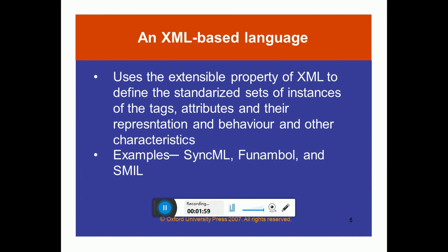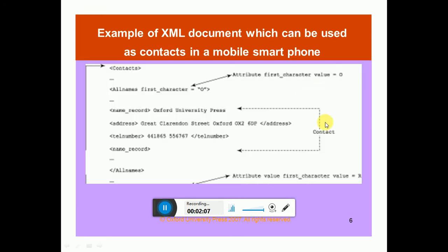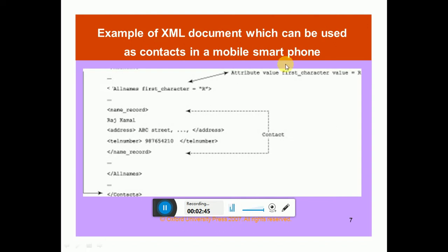An XML example based language. In this example, we can see there is a contacts element with an 'all name first character' attribute. It takes all characters as a name record — Oxford University, address: Calendar Street Oxford OX2 6DP. This attribute with first character value 'O' takes all values whose first character is O and finds all records. Name record is a different tag, address is a different tag, telephone number is a different tag. Here we are opening the record of a person named Raj Kamal, with ABC address, telephone number, and name record — this is a contact record.